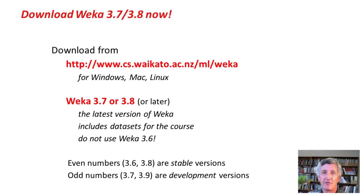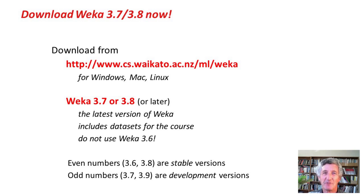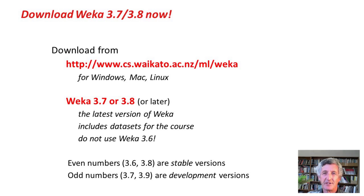What you should do now is download WEKA 3.7 or 3.8. The way WEKA works is that odd-numbered distributions — that's 3.7 — are development distributions, and then they're released as stable even-numbered versions, so WEKA 3.7 will be released as WEKA 3.8. Download the latest version of 3.7 or 3.8 if it exists — that will be fine for this course. You download it from the WEKA URL for Windows, Mac, or Linux. That download also includes datasets for the course. You do have to use WEKA 3.7 or 3.8; you can't use WEKA 3.6 because it doesn't have the package system.